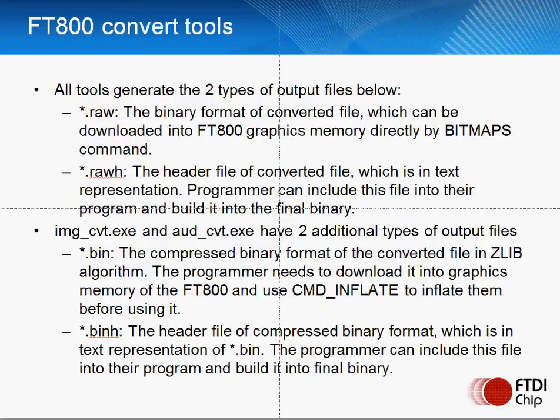All of the tools will create two types of output file: the raw data and the raw header file. The raw file is a binary format of the converted file which may be used directly by the bitmaps command in the FT800. The raw header file is a text representation of the same data.